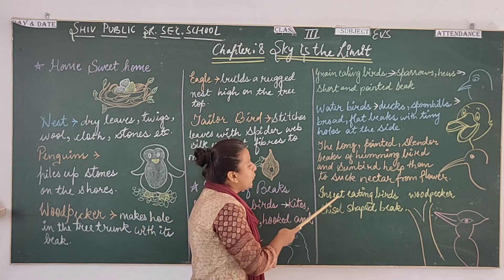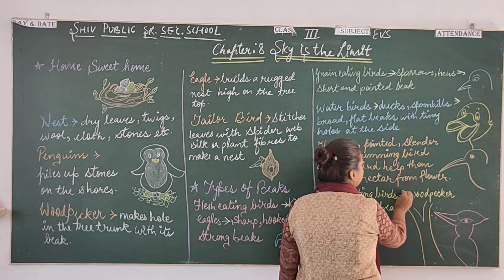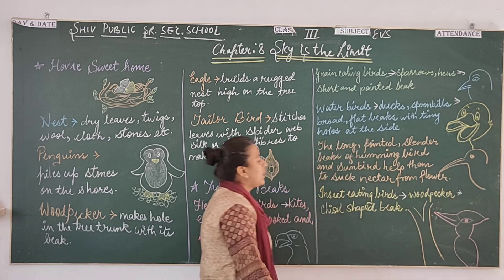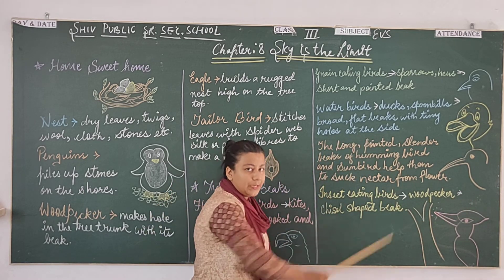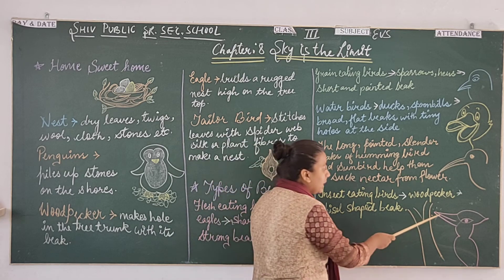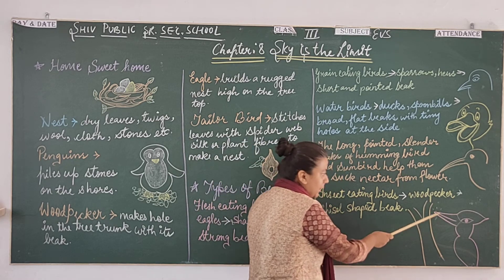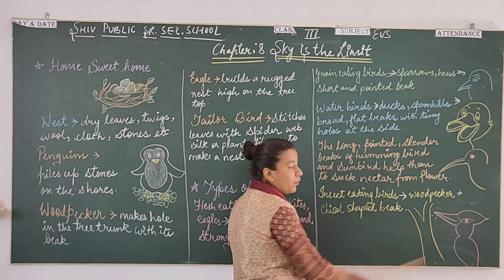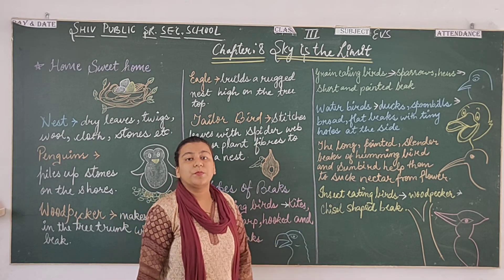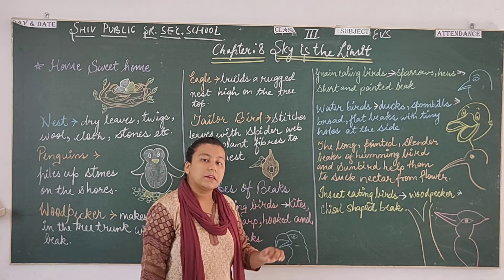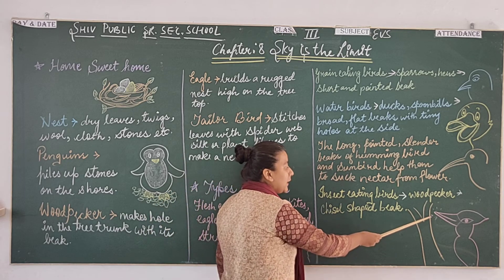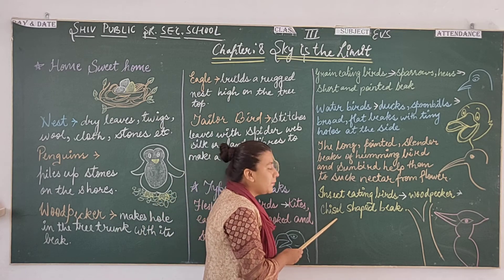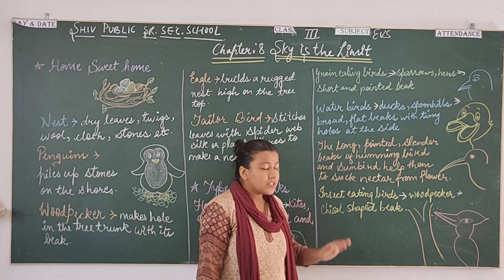The last type is insect-eating birds. For example, the woodpecker. Insect-eating birds have chisel-shaped beaks. The beak is used to peck at holes in wood. They consume insects found inside.